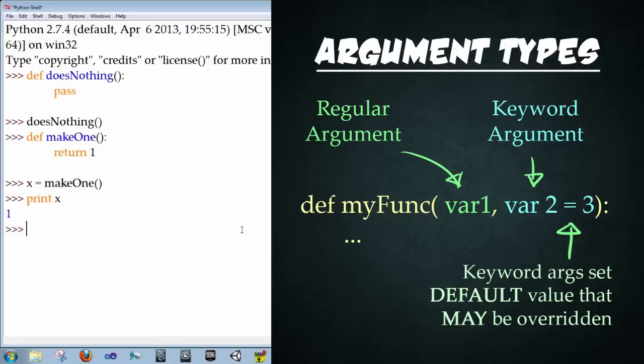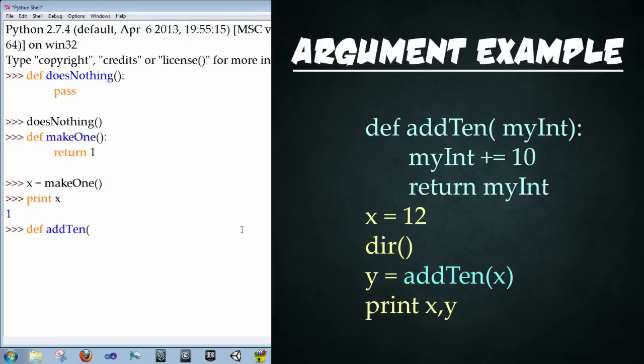Alright, so let's try a third example in which we start to use arguments. We're going to type in def addTentoMyInt in the parentheses colon enter myInt plus equals 10 enter and then we're going to return myInt enter enter.